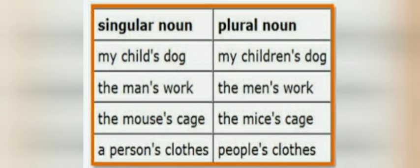Some examples: my child's dog, the man's work, the mouse's cage, the person's cloak. And in plural sense — meaning many — my children's dog. In singular sense I said my child's dog, meaning one child. My children's means I have many children, and their dog.